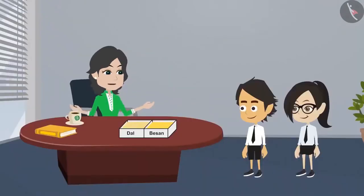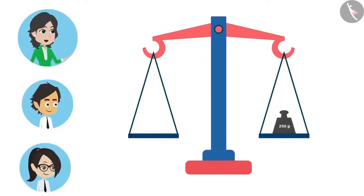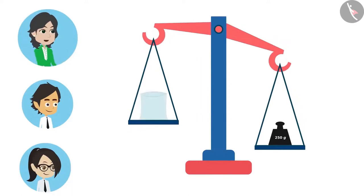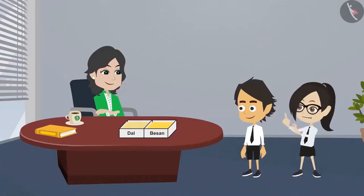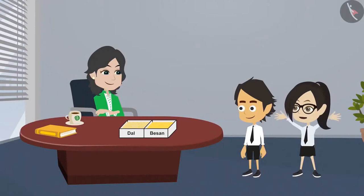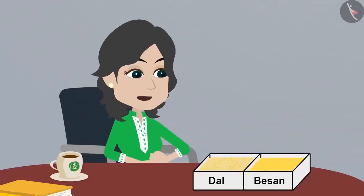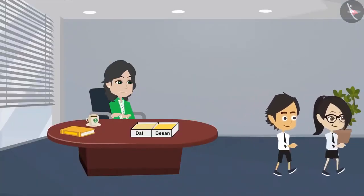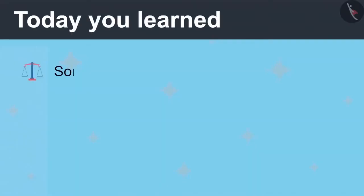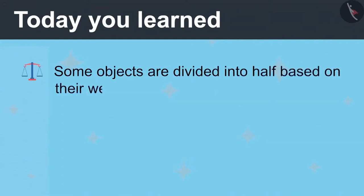Now to divide this into two equal parts, we will measure 250 grams. We will keep a 250 gram weight on one side of the scale and keep adding dal on the other side till both sides are balanced. Now there is 250 gram dal on one side of the scale. In this way we can divide solid objects into equal halves. Today you've learned that some objects are divided into half based on their weight. A scale and weights are used to measure the weight of any item.